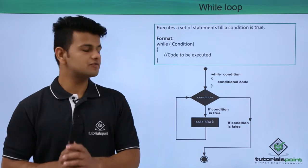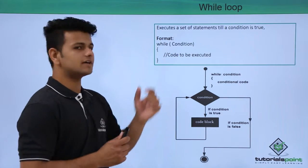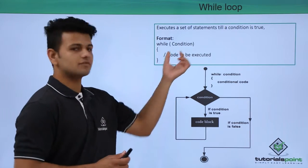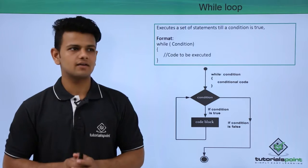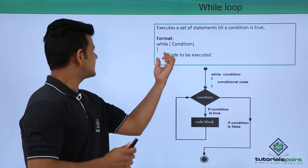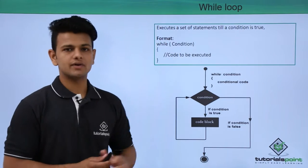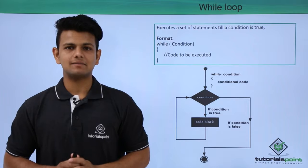The format of a while loop is: first we write the while keyword, inside the brackets we write the condition that we want to check, and after that inside the brackets we write the code that we want to execute multiple times.